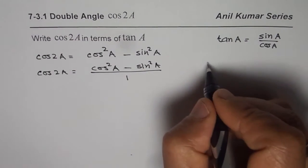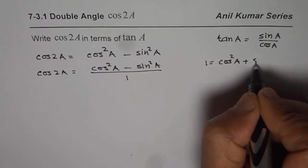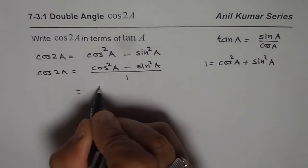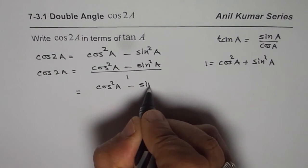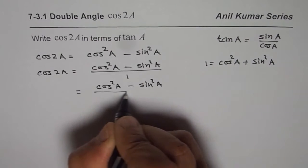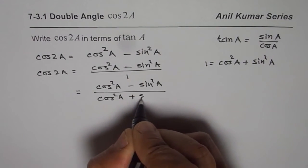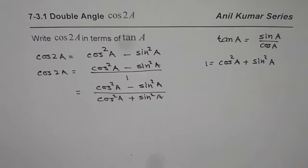And this 1 can be written as cos²A plus sin²A. So exactly the same steps we are going to follow. We write this as cos²A minus sin²A divided by cos²A plus sin²A. Do you see? From nowhere we get these two terms in the denominator.